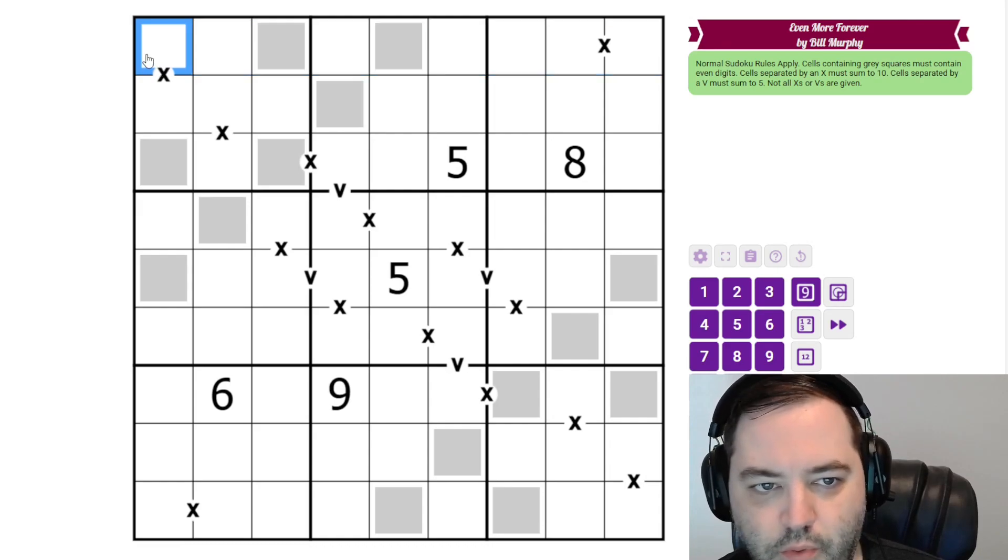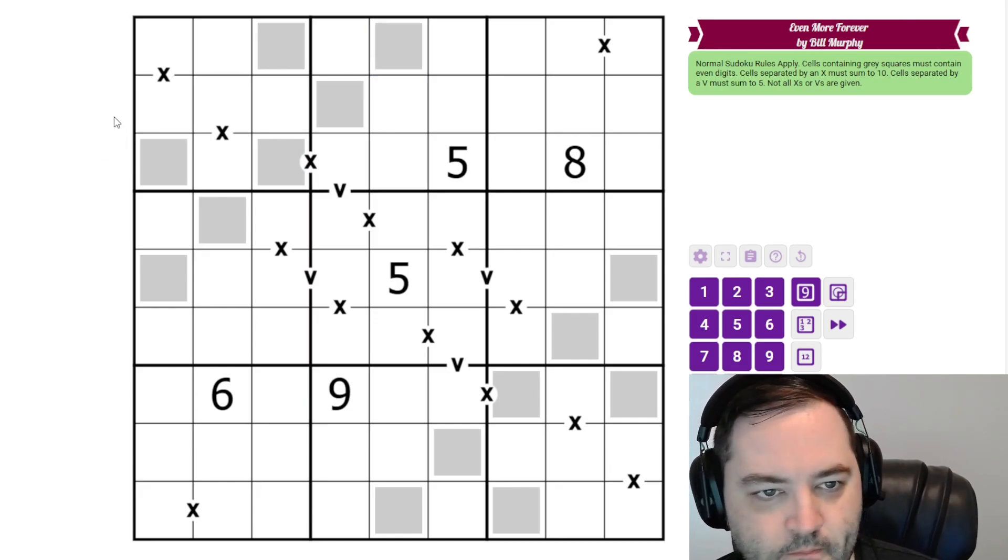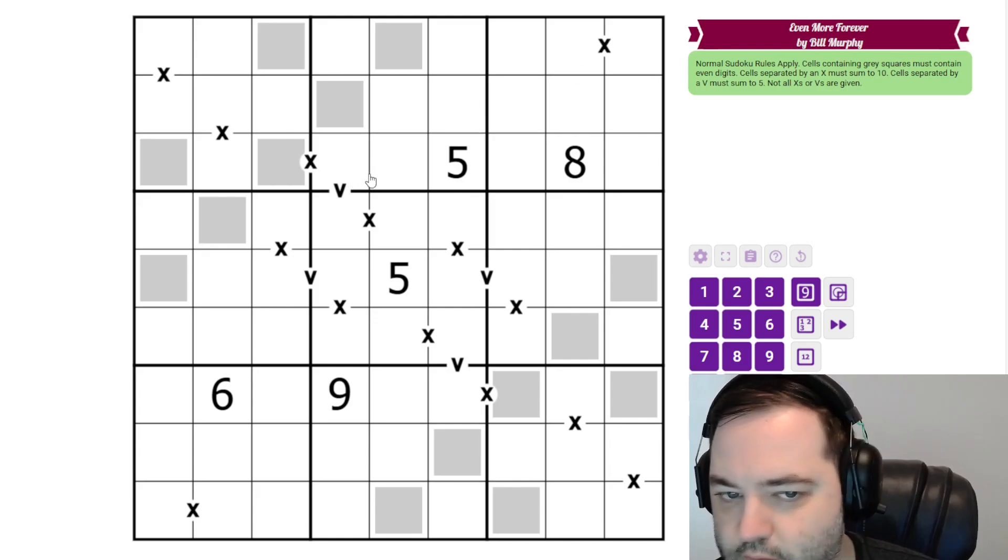So we have normal Sudoku rules, one to nine in each row, column, and three by three box. We have some gray squares in the grid. Digits in the gray squares must be even.